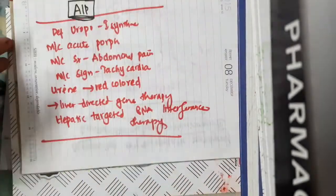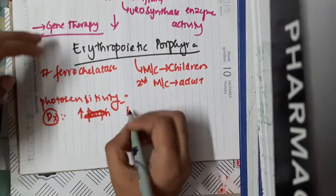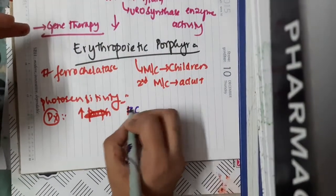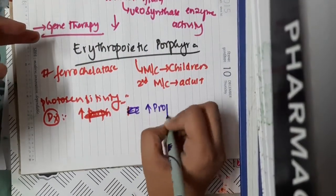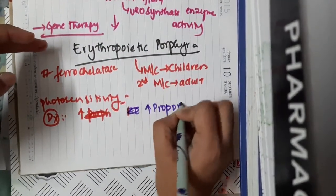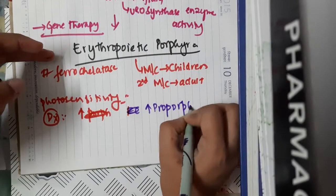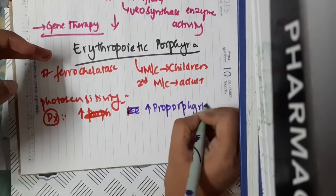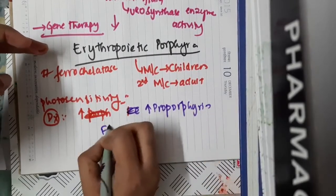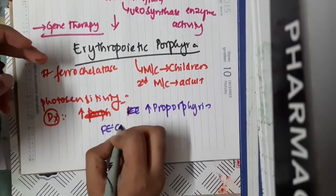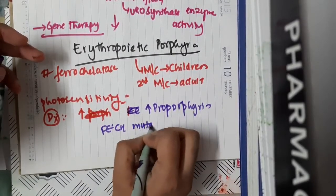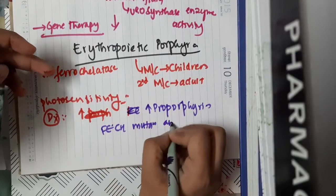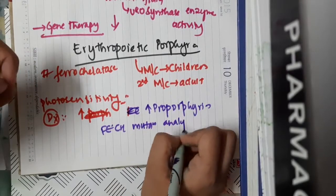You can also see increased protoporphyrin levels on testing, and FECH mutation analysis — that is, ferrochelatase mutation analysis — can also be done for erythropoietic protoporphyria.